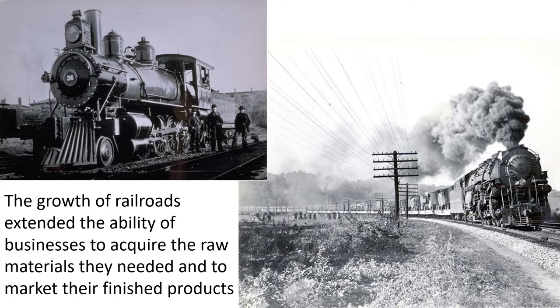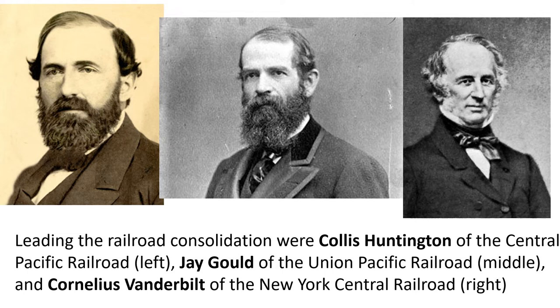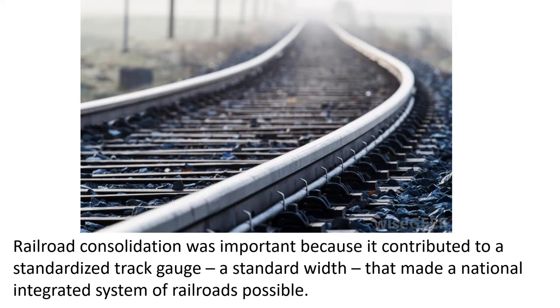People had already applied steam to create railroads, and in the late 19th century the Industrial Revolution saw the growth of railroads tremendously. It extended the ability of businesses to acquire the raw materials they needed and market all the finished products they were creating. There was cutthroat competition, with leaders like Collis Huntington of the Central Pacific Railroad, Jay Gould of the Union Pacific Railroad, and Cornelius Vanderbilt of the New York Central Railroad — whose family famously started Vanderbilt University. All the railroad growth and consolidation was important because it contributed to a standardized track gauge that made a national integrated system of railroads possible.